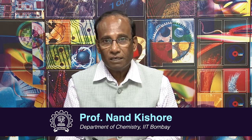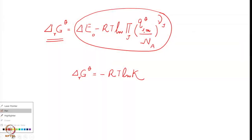Welcome back to the lecture, which is devoted to connecting the equilibrium constant with the molecular partition function. In the previous lecture, we started with an expression for the Gibbs function or Gibbs free energy and expressed delta G naught in terms of delta E naught and the molecular partition function. Then we discussed that since delta G naught is equal to minus RT log K, we can equate the two.